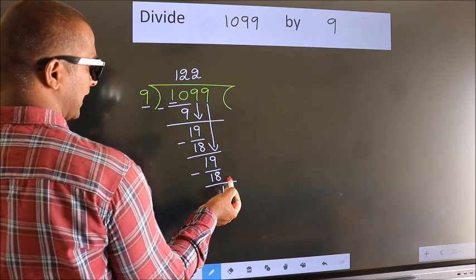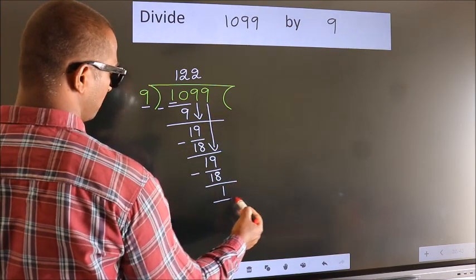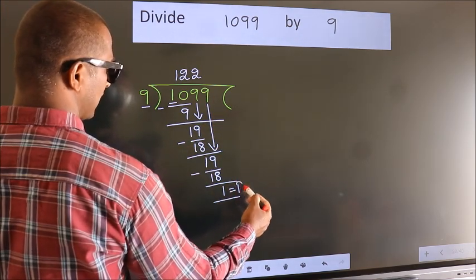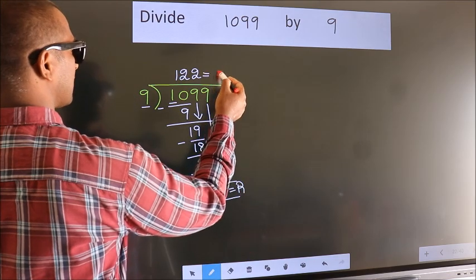No more numbers to bring down, so we stop here. This is our remainder. This is our quotient.